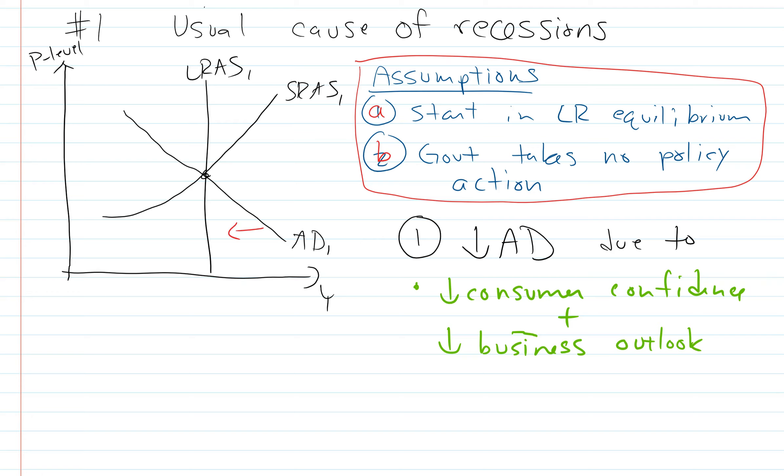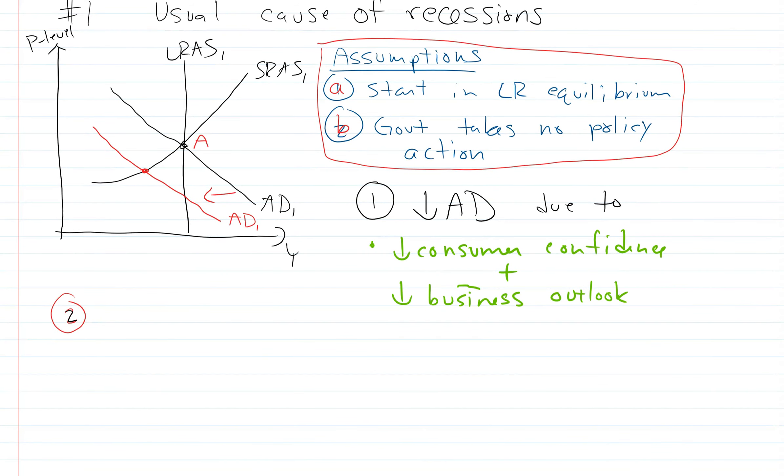Let's go ahead and draw this. We can label our first equilibrium A. So the next step is our aggregate demand falls. Then when aggregate demand falls, the next thing that happens is our firms are going to cut back on production. So this is going along the short-run aggregate supply curve. The firms cut back on production due to the falling aggregate demand.